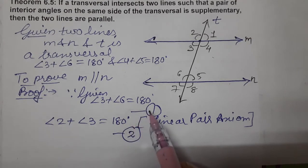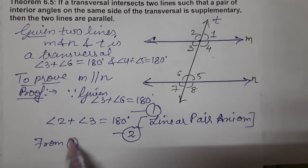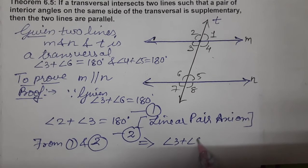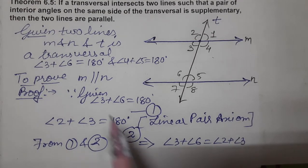Now from equations one and two, what result are we getting? This is also 180, this is also 180. Means left hand side is equal. From equations one and two, we get: angle 3 plus angle 6 equals angle 2 plus angle 3. Both left hand sides are equal because right hand sides are equal.